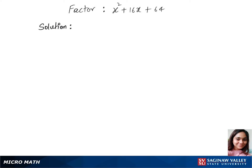Let's factorize this trinomial. We'll first find factors of 64. The factors of 64: we have 8 times 8, and the sum of this pair, 8 plus 8, is 16.